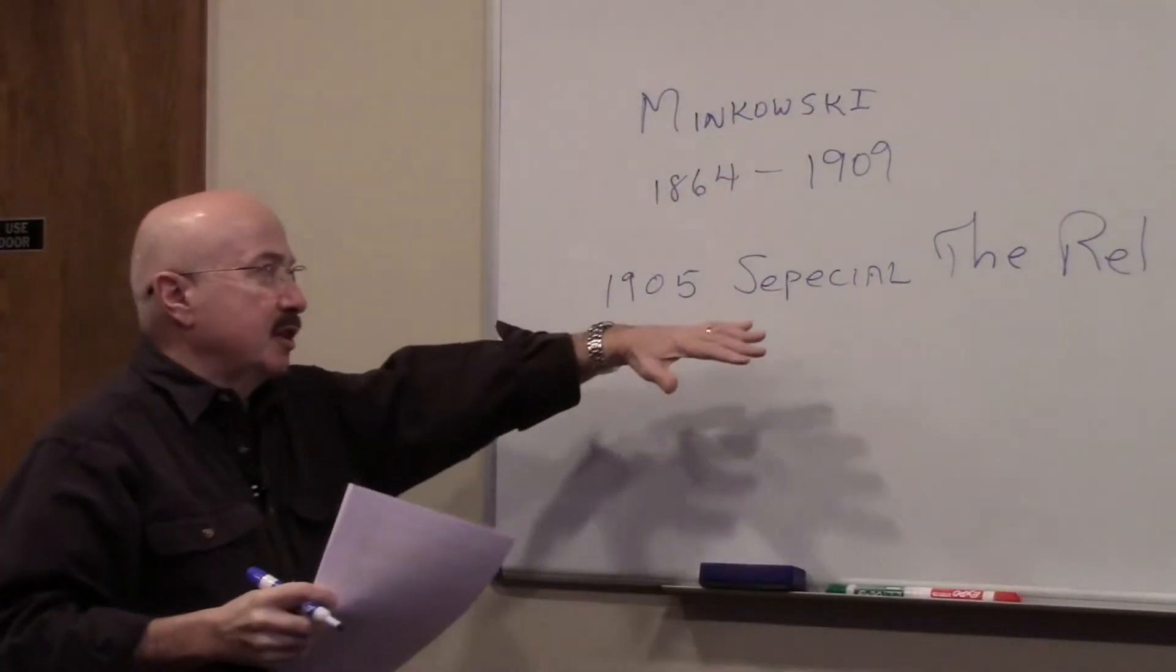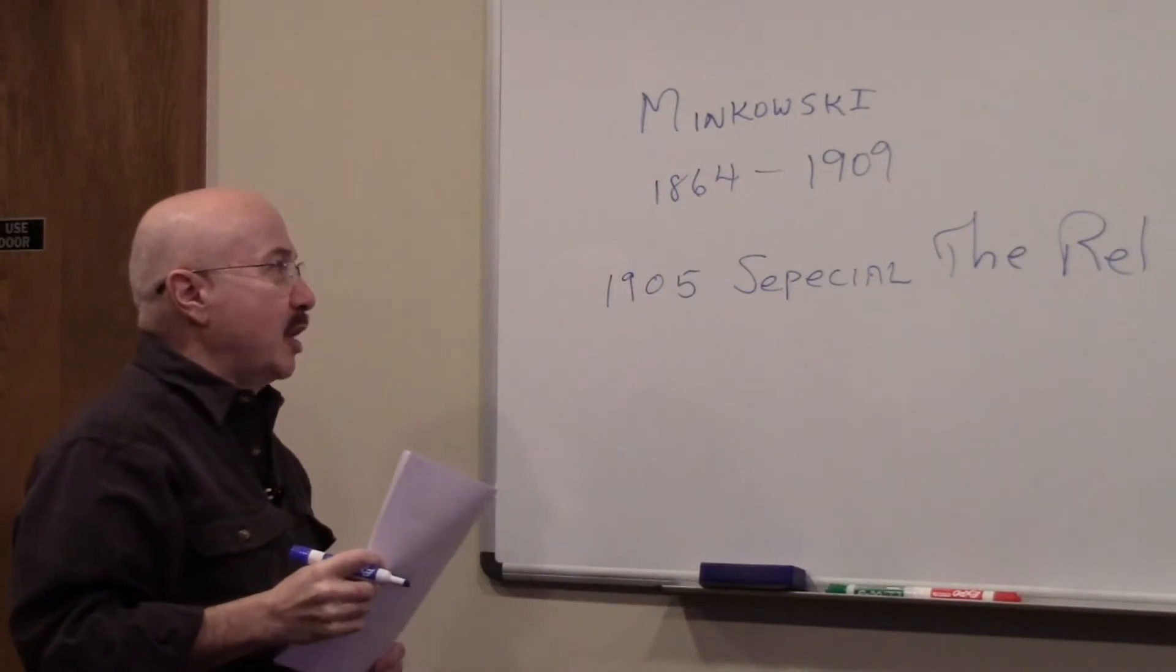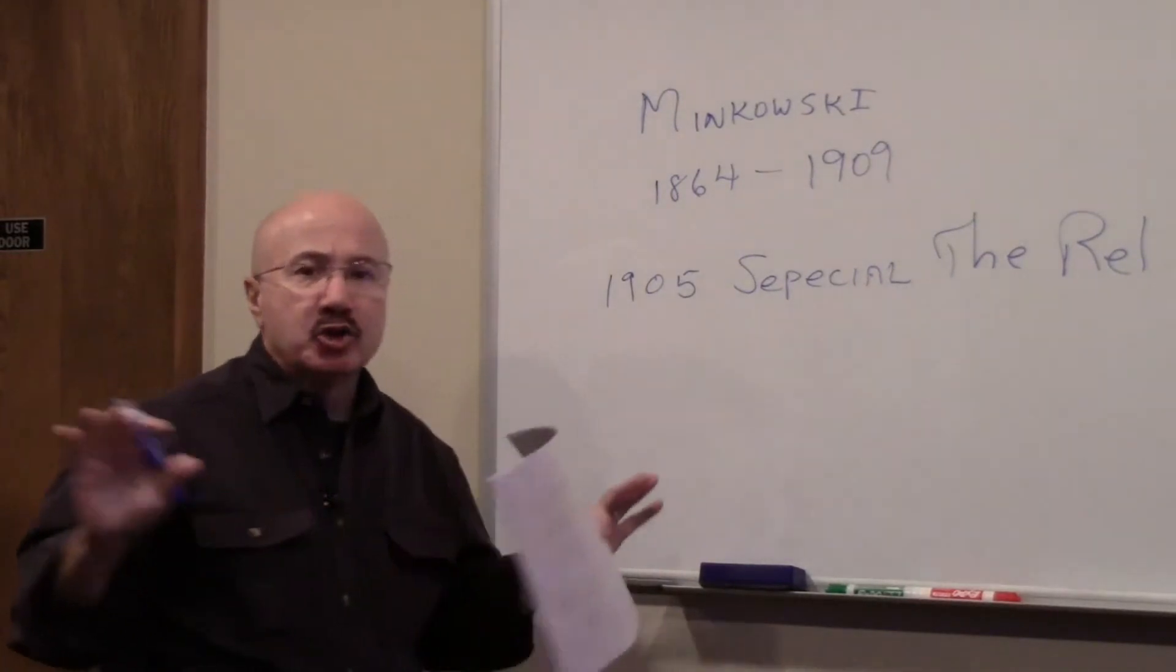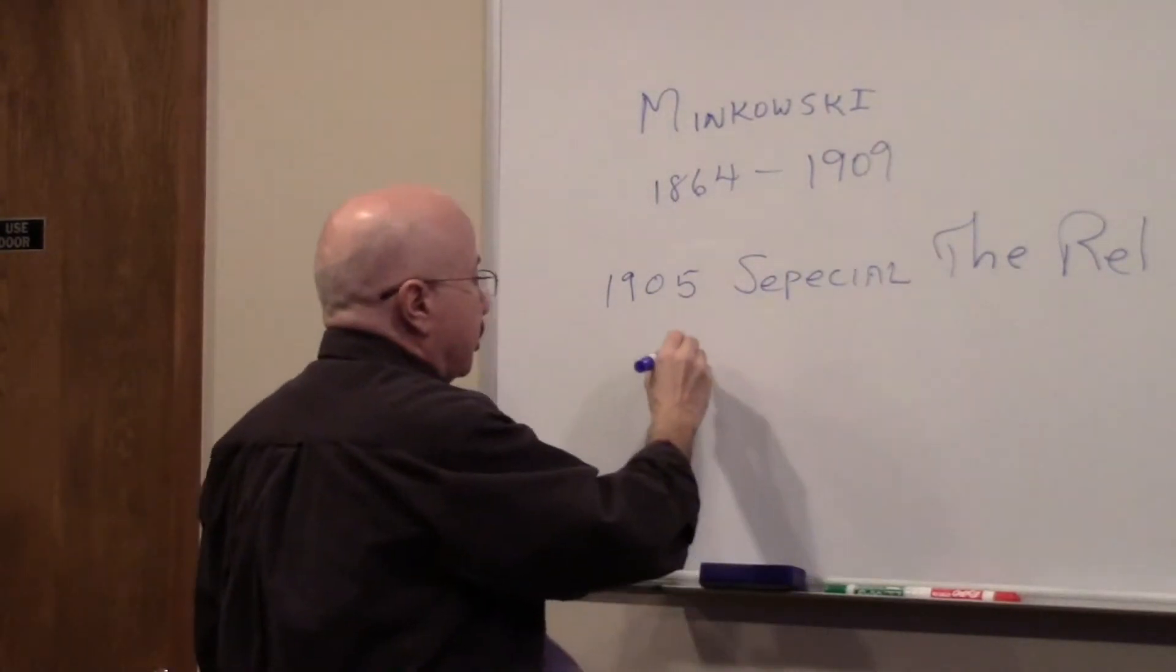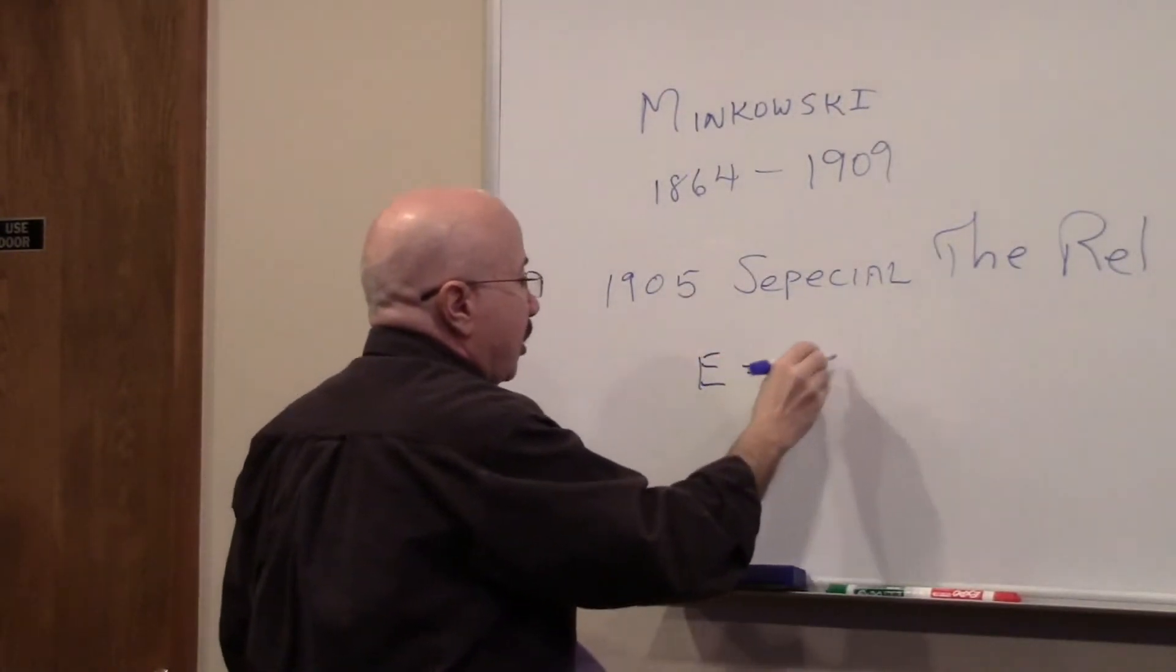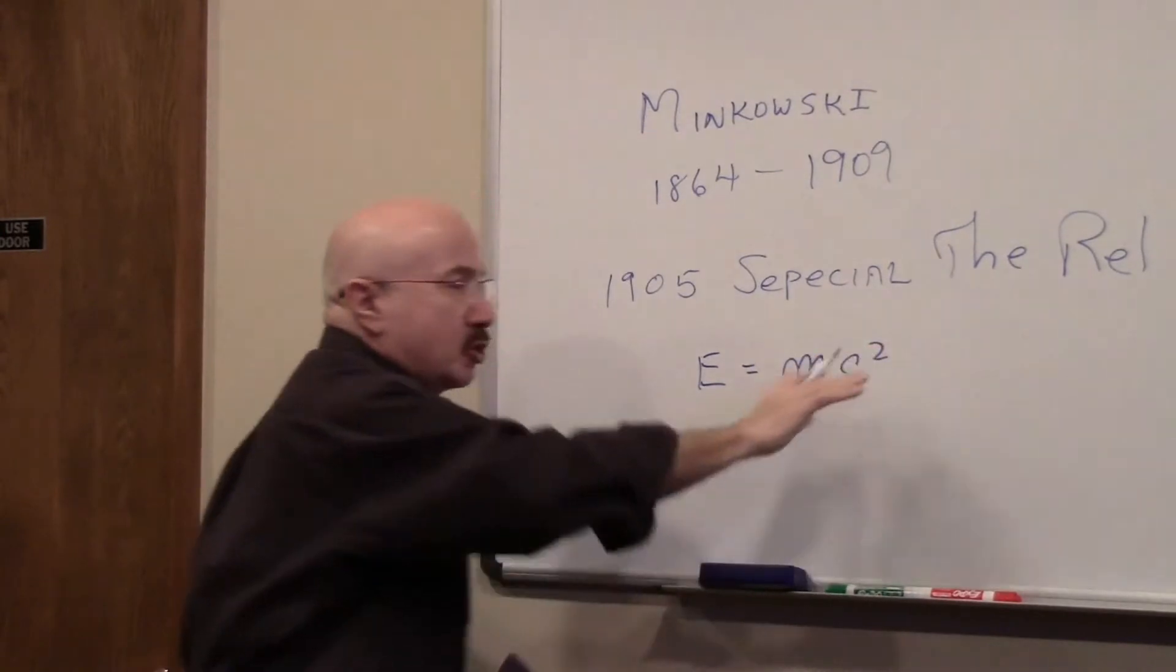And I'm just abbreviating special theory of relativity comes out. And he does it algebraically. So we're all familiar, for example, with E equals MC squared. This is algebra.